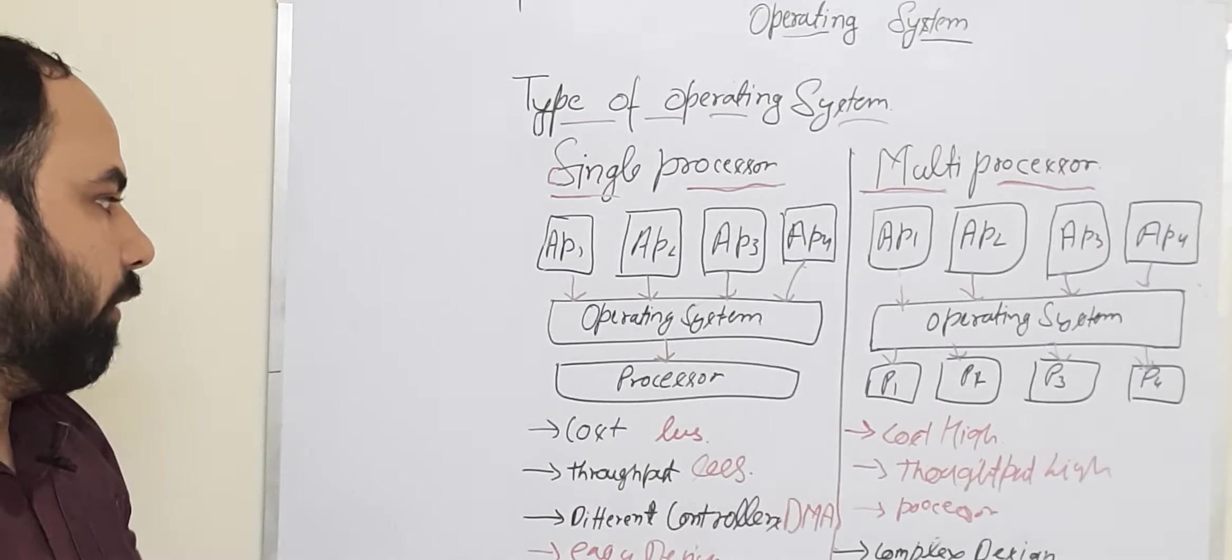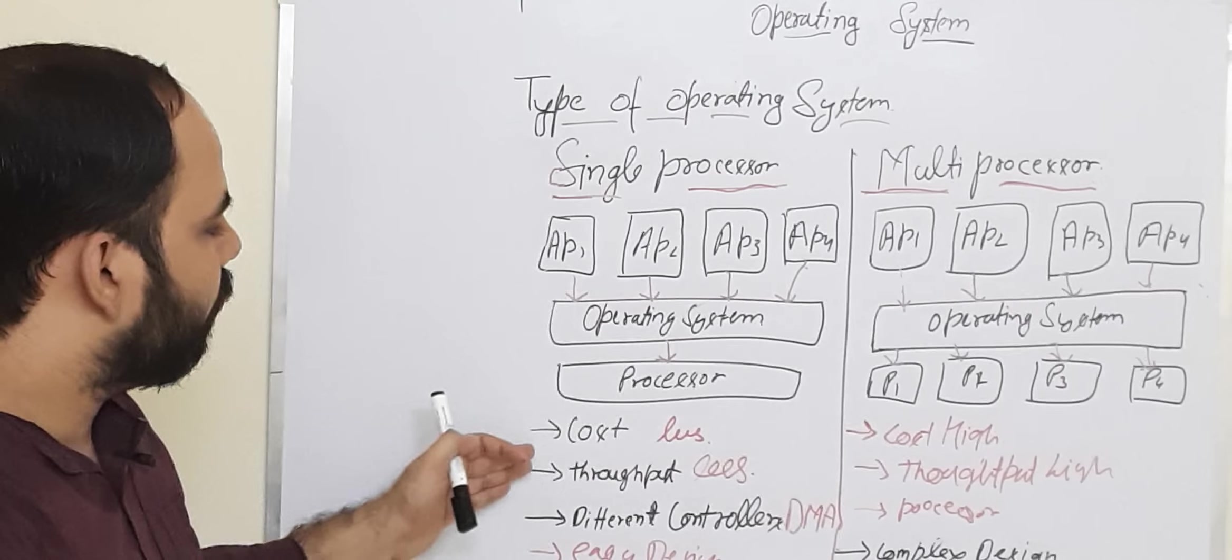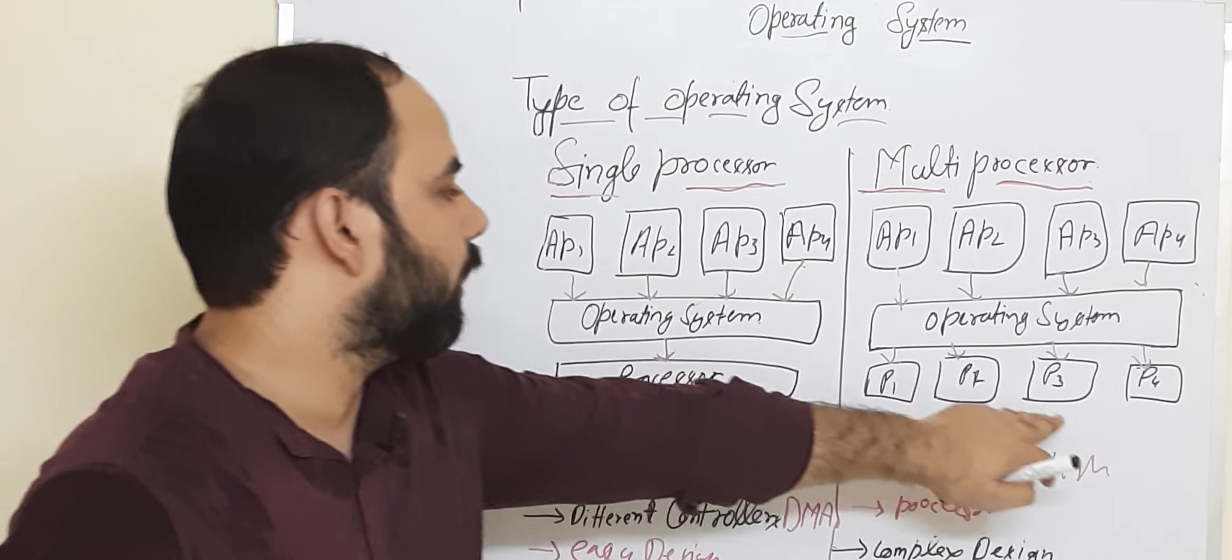So this is the difference. Let's take a look at the cost and throughput. The cost and throughput is less than high.